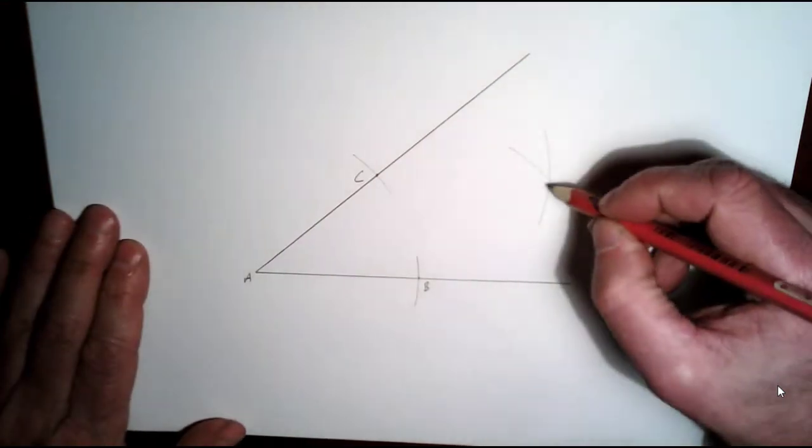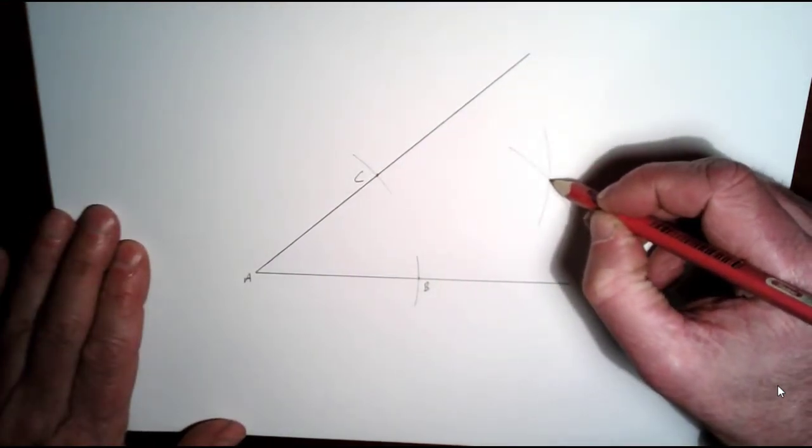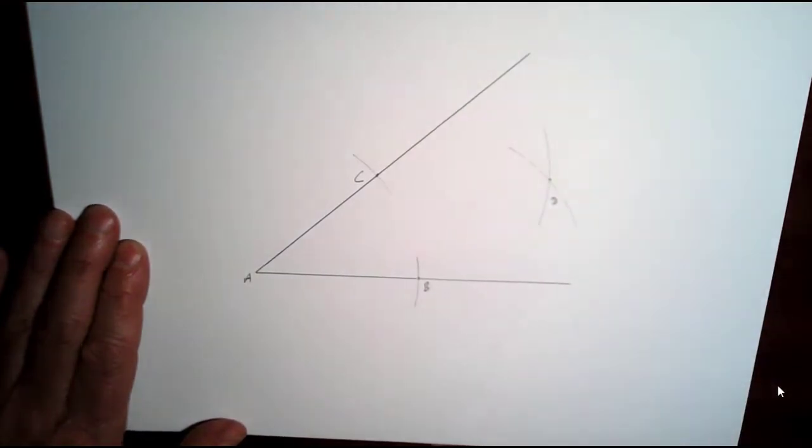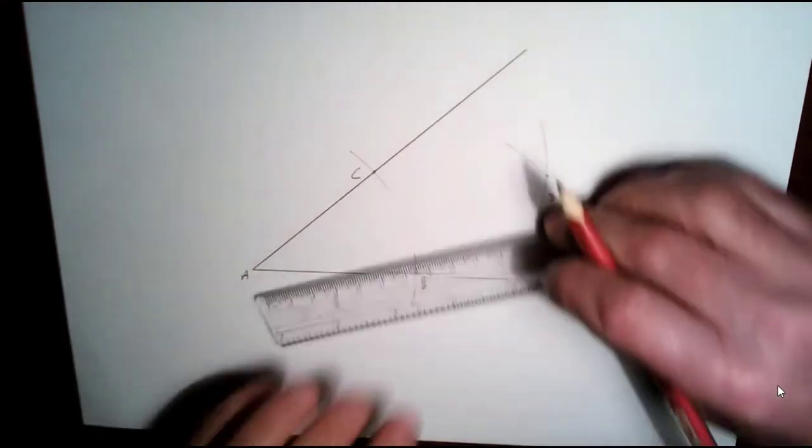And then just mark the point of intersection here. Let's call it D. Now you're going to join D up to A.